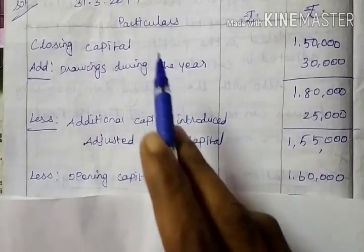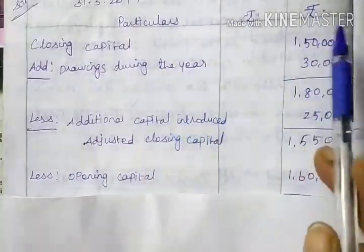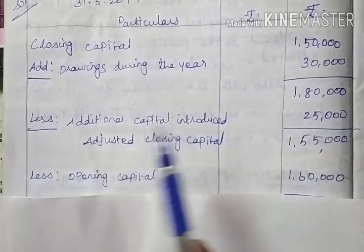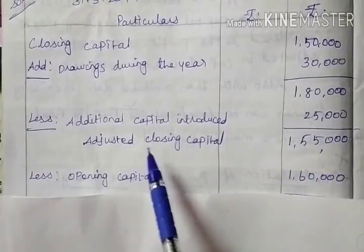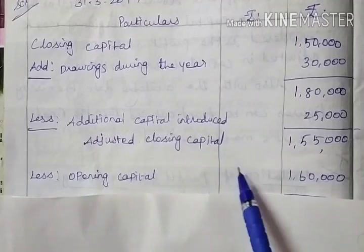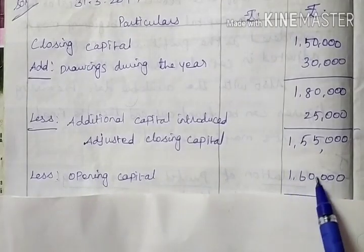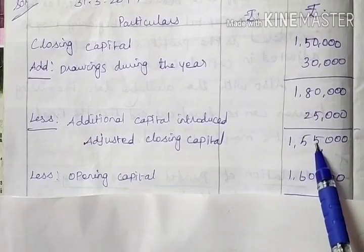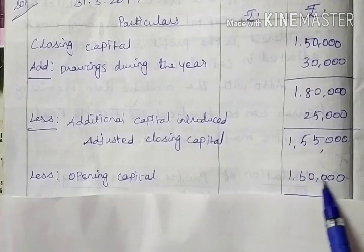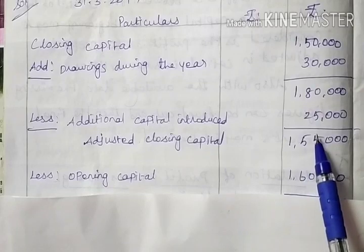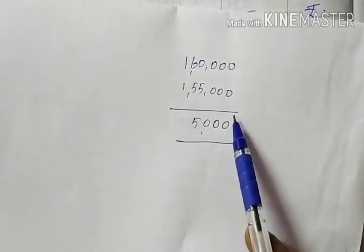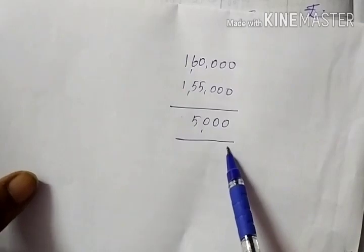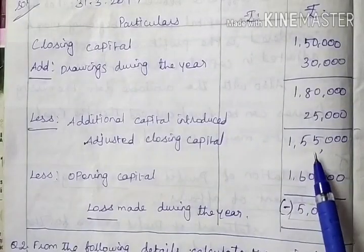Solution: Closing capital 1,50,000, add drawings 30,000 — answer 1,80,000. Less additional capital introduced 25,000 — answer 1,55,000. That is the adjusted closing capital. Less opening capital 1,60,000. Listen carefully: adjusted closing capital is 1,55,000 but opening capital is 1,60,000. Opening capital is more than the adjusted closing capital, so first subtract: 1,60,000 minus 1,55,000 equals 5,000.